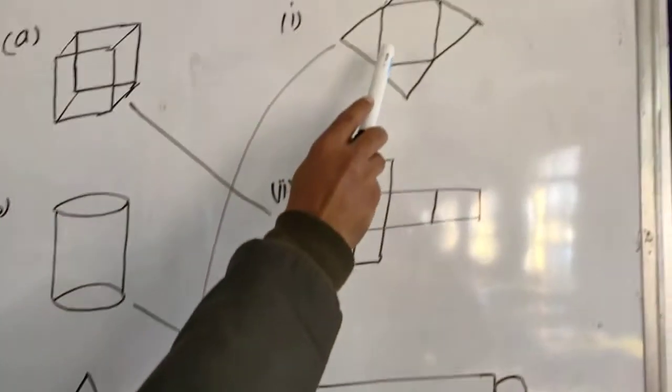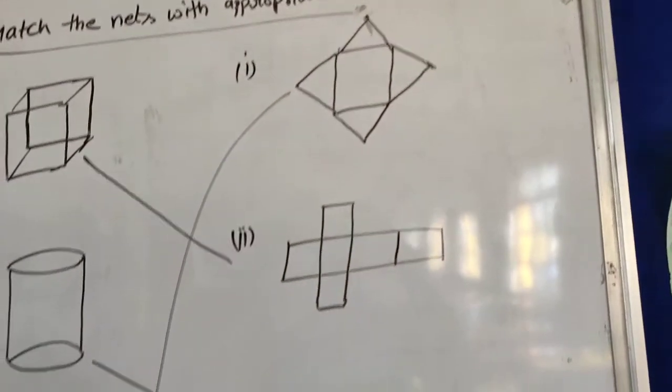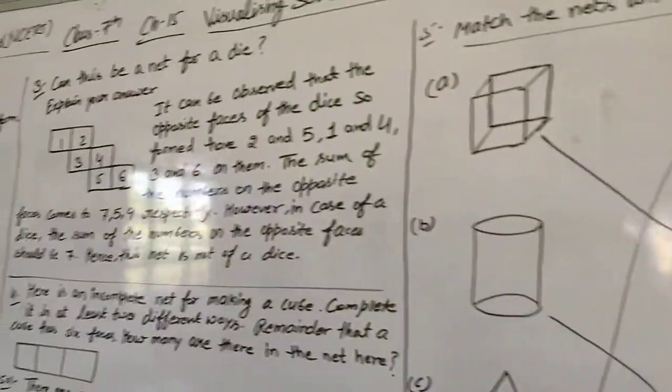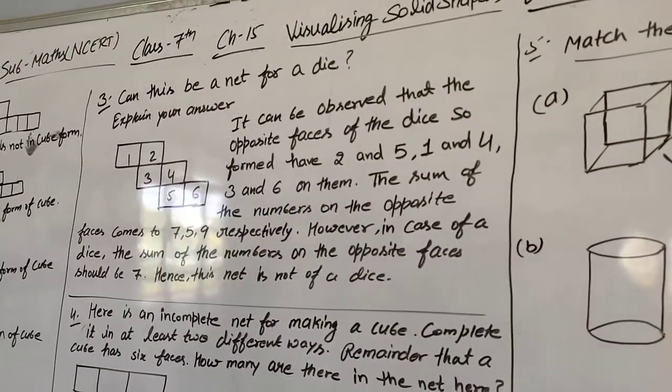D is triangular pyramid, so the first option is correct. So students, Exercise 15.1 is complete. In the next video we will start Exercise 15.2. Thank you.